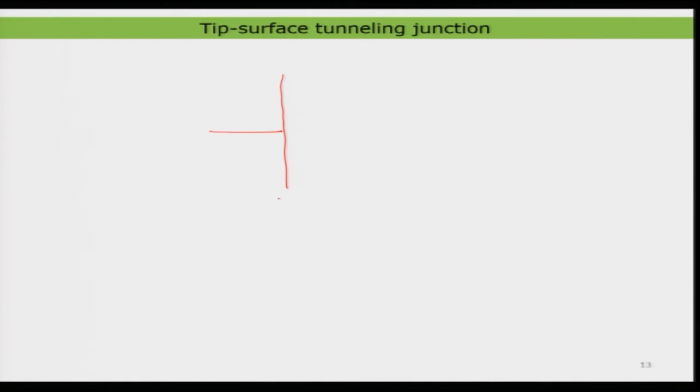Let us bring this into the context of our microscope — the scanning tunneling microscope — and understand how the whole thing works. For that I need to take one metal — that is going to be my sample, or the surface. I am defining z equal to 0 as representing the surface of the sample; this side is the bulk and this is the surface.